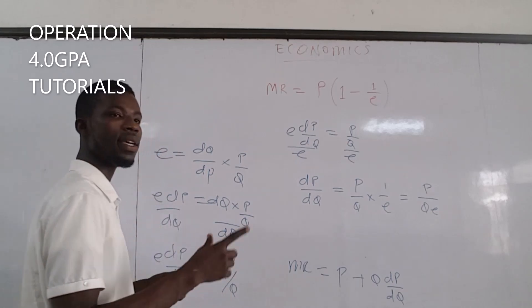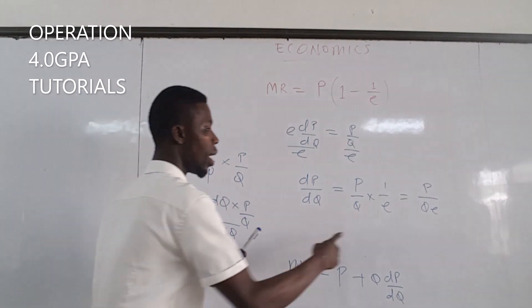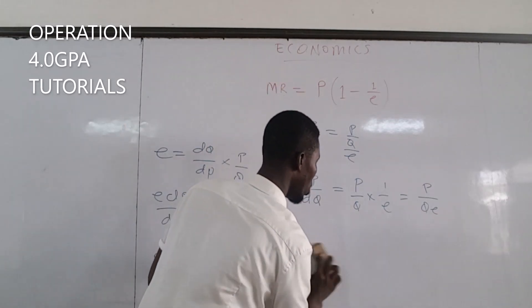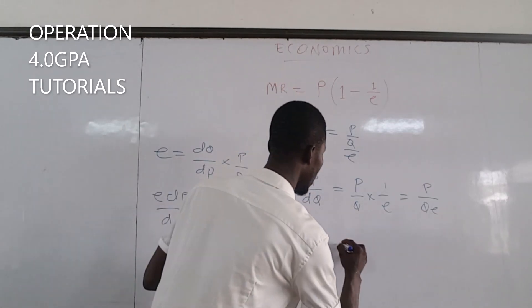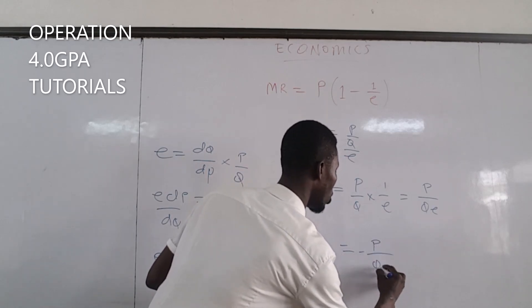Now we all know that elasticity is negative. So we could have put a negative sign here. Or, as our final answer is here, we can make it negative. That would be dP over dQ equals minus P over QE.